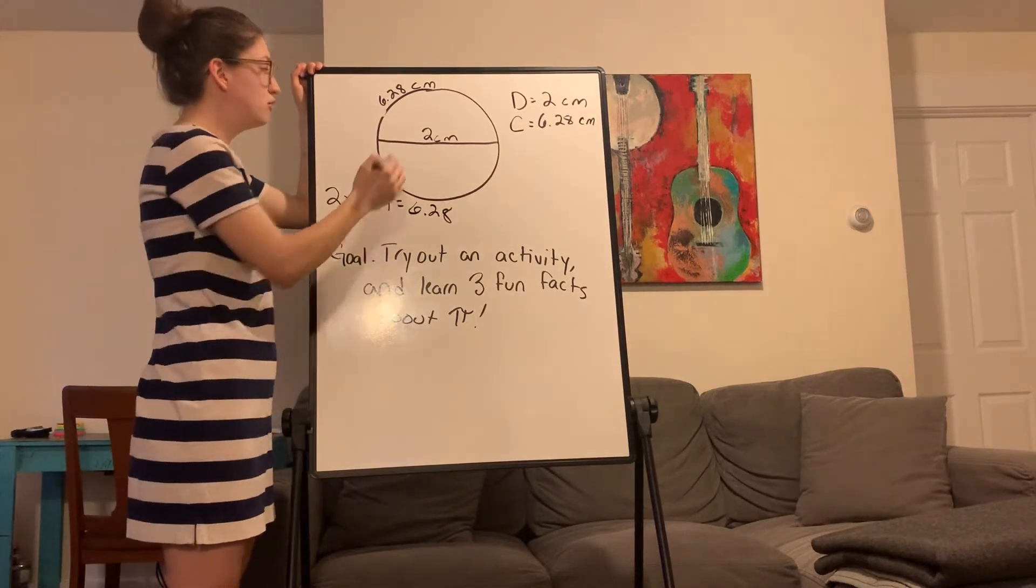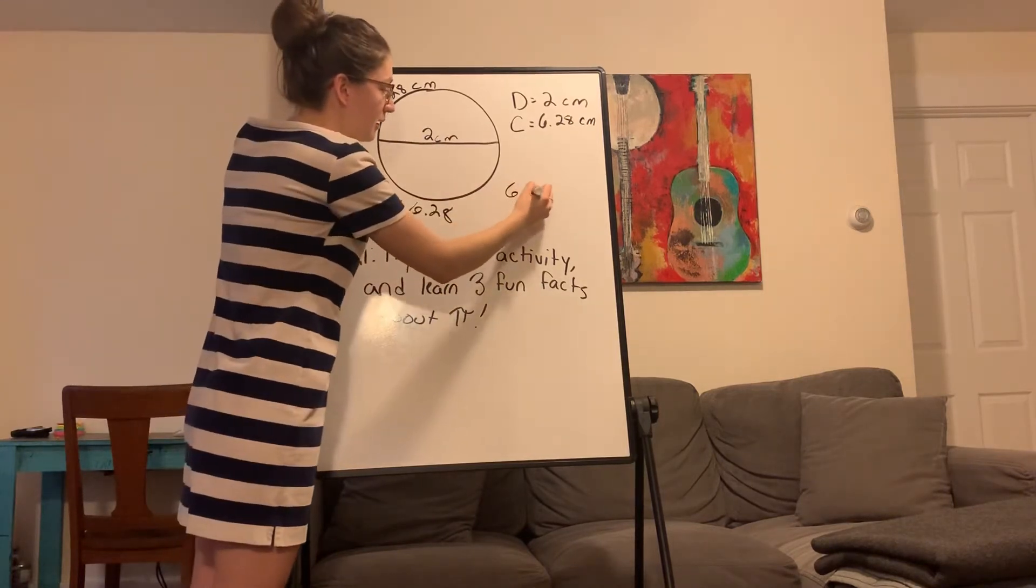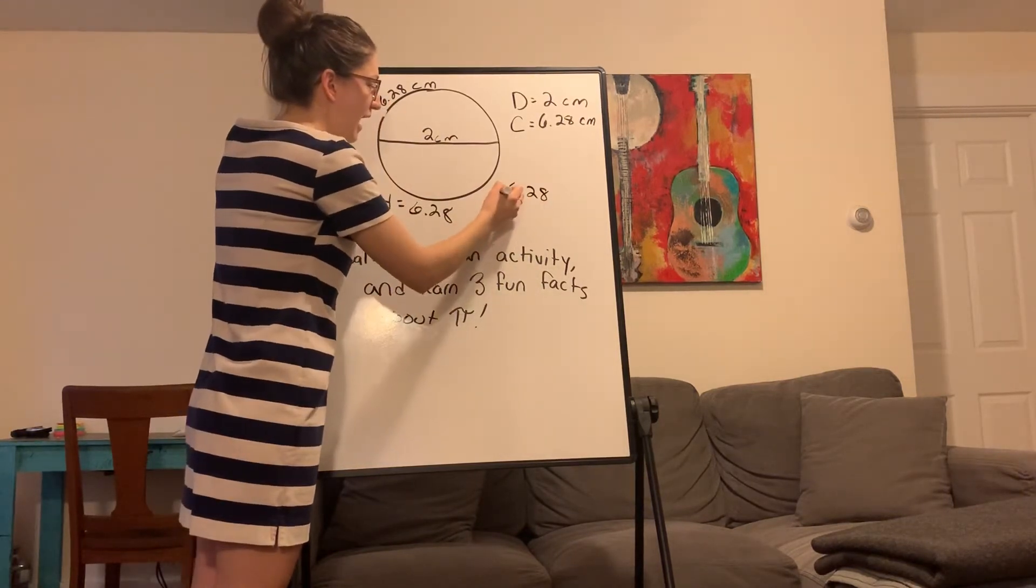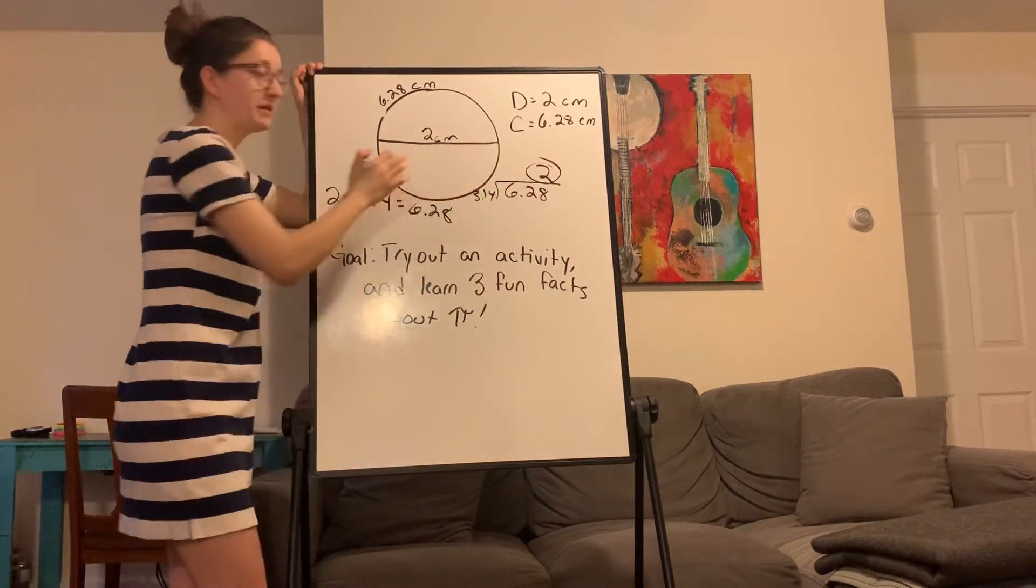You can also go backwards. If you know just the circumference, if I know that the circumference is 6.28 and I divide that by Pi, I'm gonna get 2, which is my diameter.